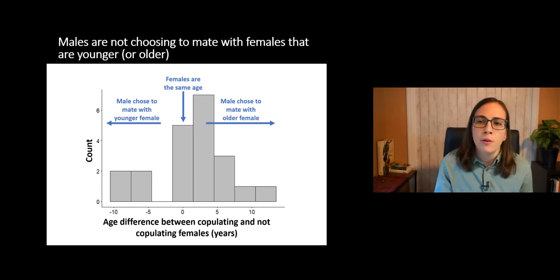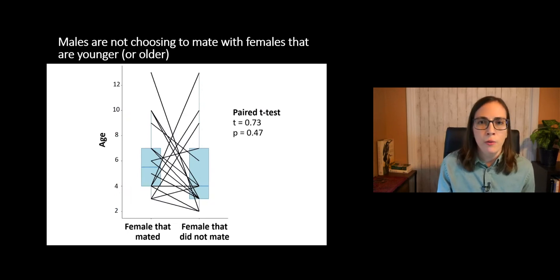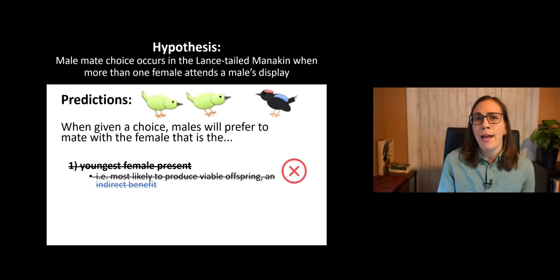And then right in the middle at zero, that's where there's no difference. These are situations where the two females visiting were the same age. But to show you an actual analysis of this data, here's a graph of the results from a paired t-test where we found that males are not choosing to mate with females that are younger or older. So on the left, we have the female that mated, and on the right, we have the female that did not mate. And then age is on the y-axis. So there are actually two different types of graphs depicted here. The blue boxes are box and whisker plots. And then the thicker black lines that are going across the graph represent single displays. So, for example, this one here at the bottom, this would be a situation where a three-year-old female and a two-year-old female were present on the display perch, and the male mated with the three-year-old female. And so our results did not match our original prediction, and it appears that males are not using age for making a choice between females.